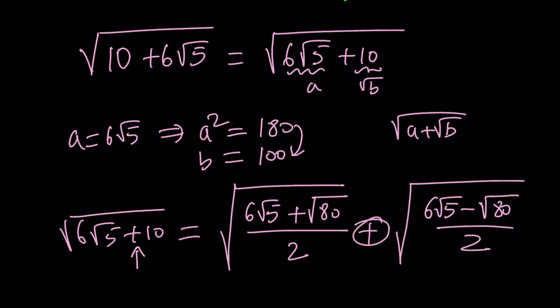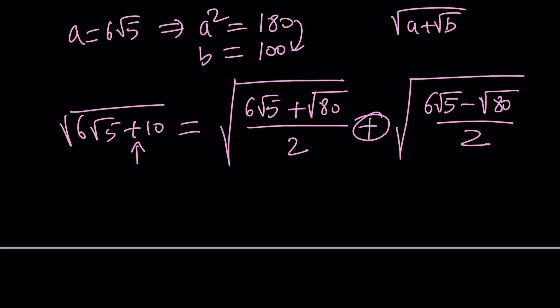I think you can memorize this formula because I did. So what does that become? What's the square root of 80? It's 4 root 5. So that's going to give me 4 root 5 and then 6 root 5, 10 root 5, divide by 2. That's going to be 5 root 5. Awesome.